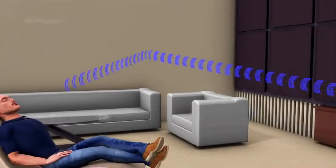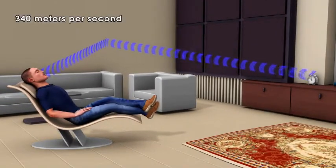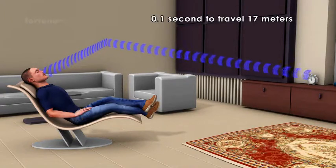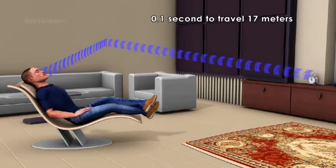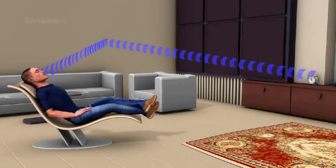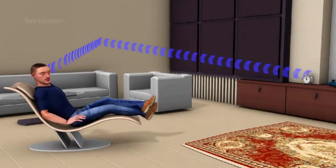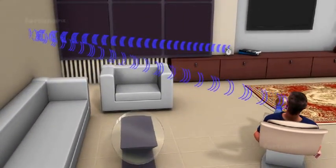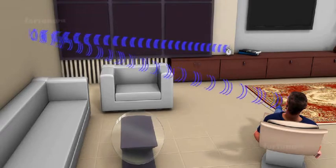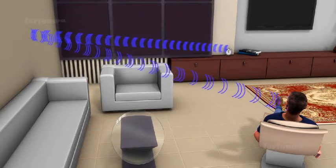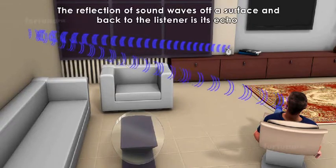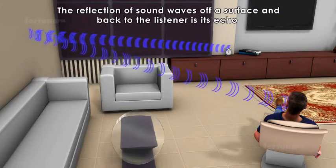Sound travels at about 340 meters per second. It will take only about 0.1 second to travel 17 meters and reflect back. We can perceive the sound for only 0.1 second. And if the sound reaches our ears after 0.1 second, there will be a discernible delay between the original and the reflected sound. The reflection of sound waves off a surface and back to the listener is its echo.